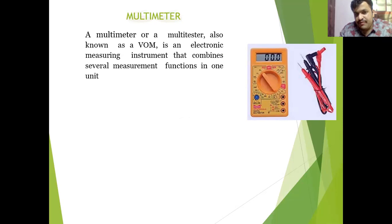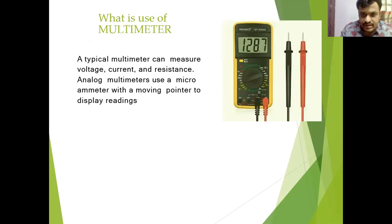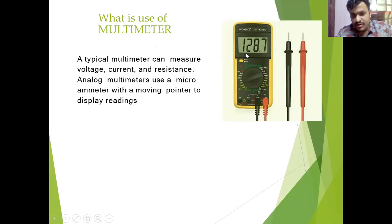Now we come to another topic — that is the multimeter. I will say what is a multimeter. A multimeter is a device used to measure different parameters. It can measure voltage, current, resistance, etc. Using this single device, we can measure everything. Here we can see this is a multimeter — when we rotate this knob, we can measure voltage or resistance according to that.